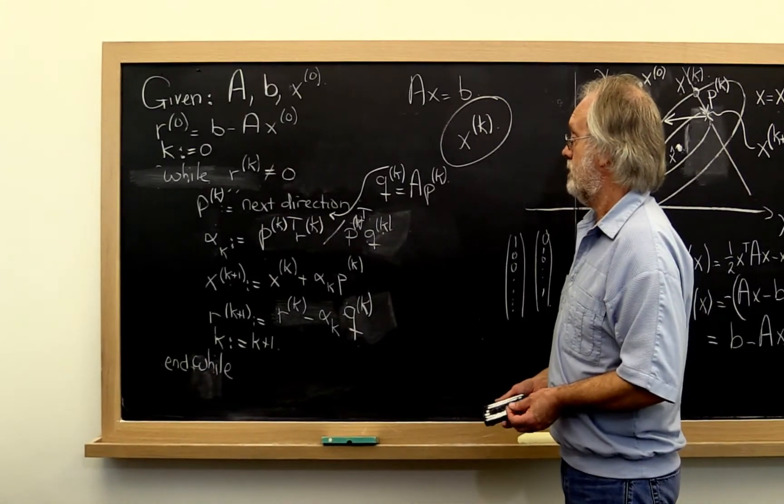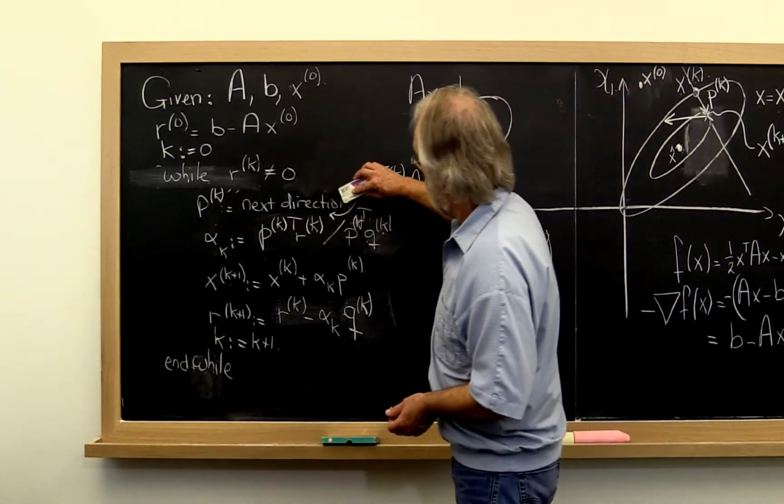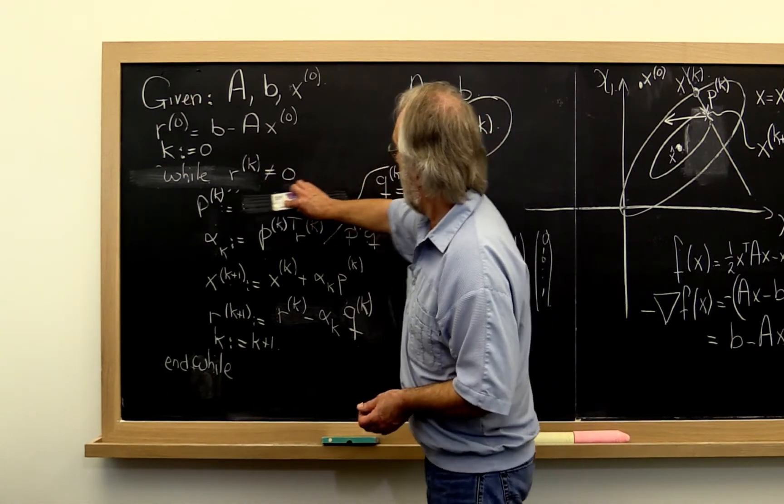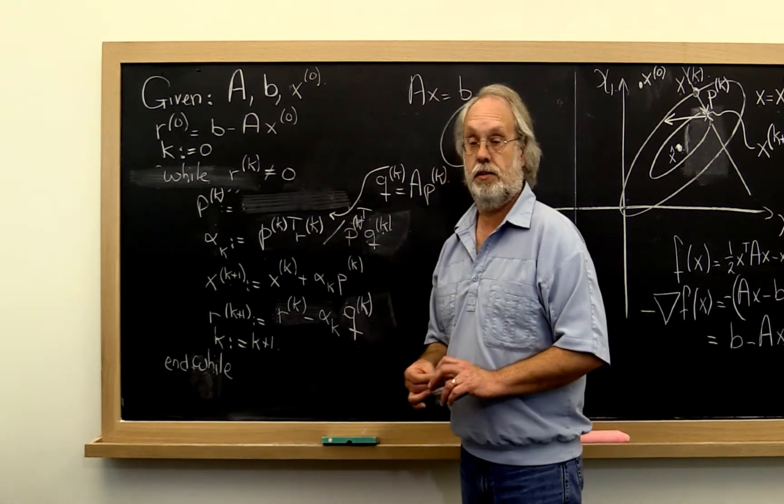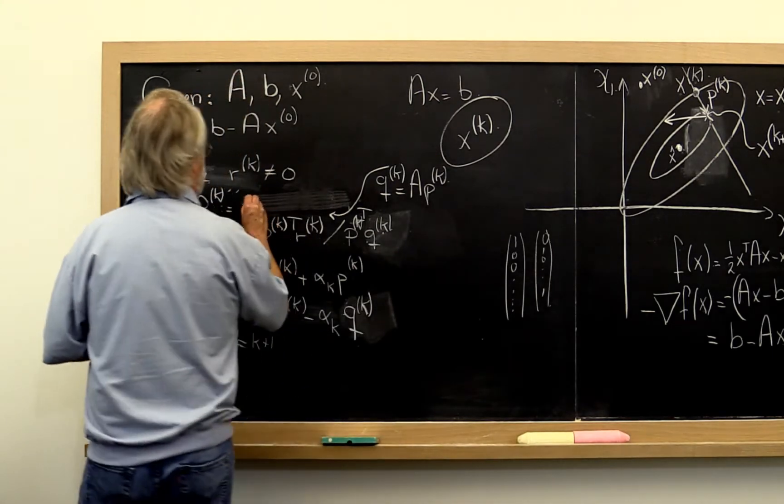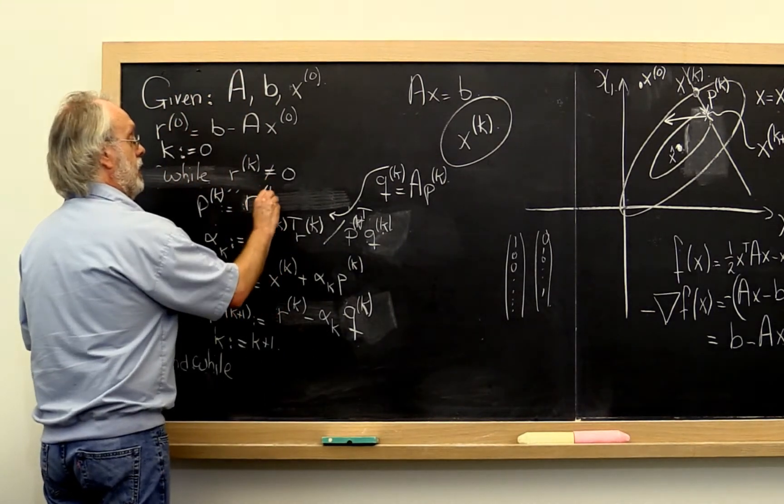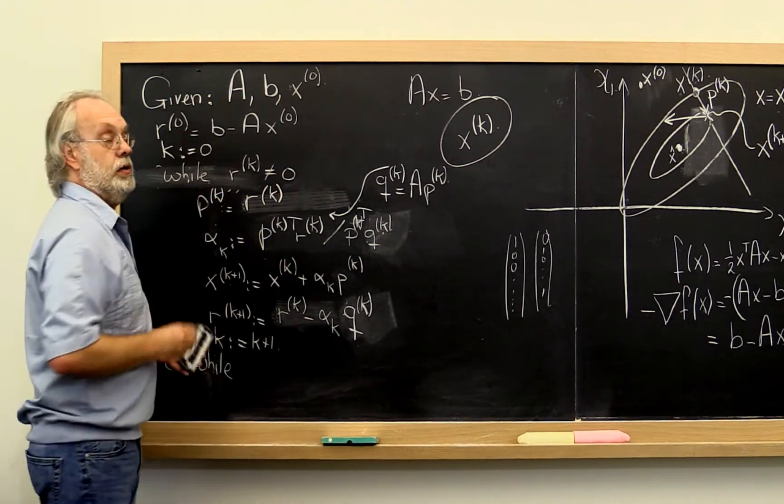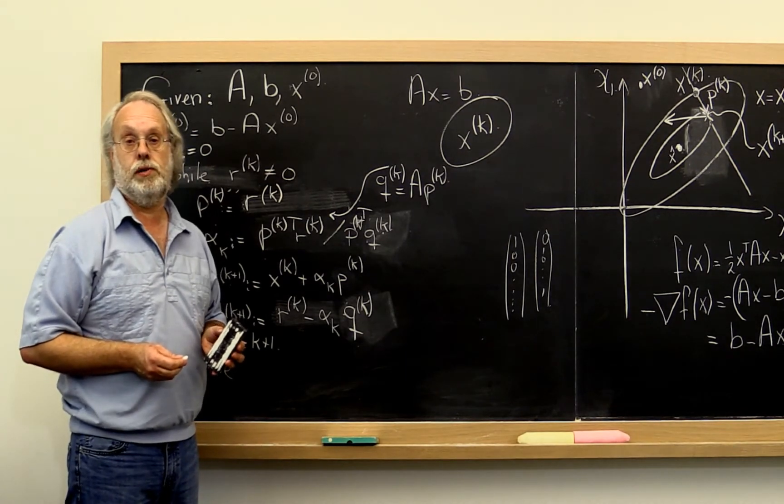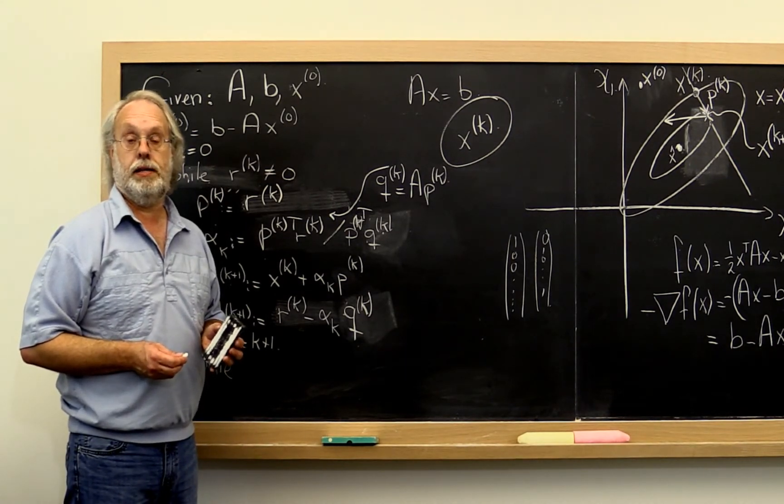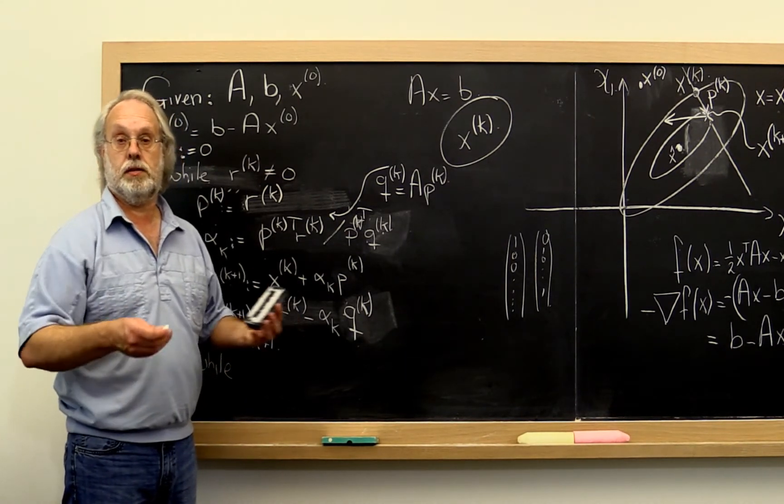What does that mean? Well, it means that we could try taking our next direction to be simply our current residual. And that's known as the method of steepest descent.